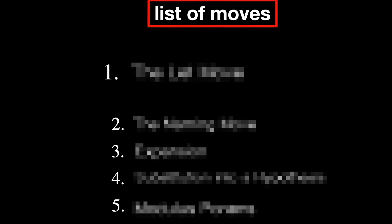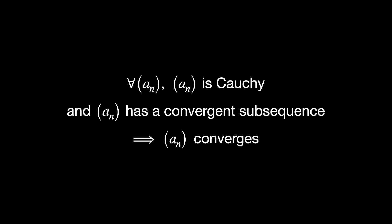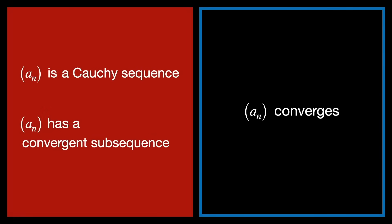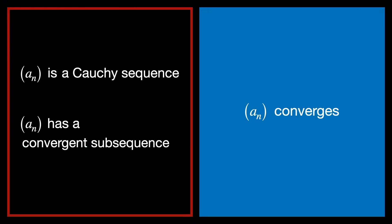Now we're going to apply something called the let move, which is a classic move for every statements. The idea is, instead of reasoning about all sequences at once, just focus on one arbitrary sequence that satisfies the assumptions. So we instead change it to let a sub n be a Cauchy sequence that has a convergent subsequence. This is now a working assumption, something we're allowed to use.